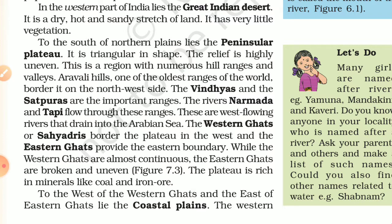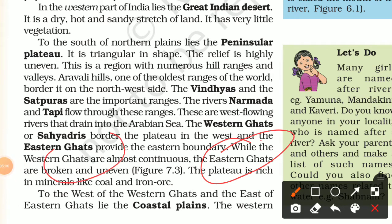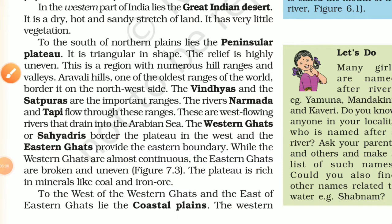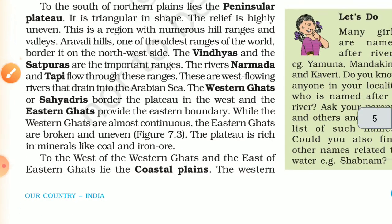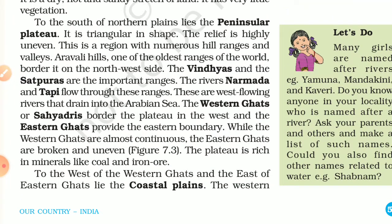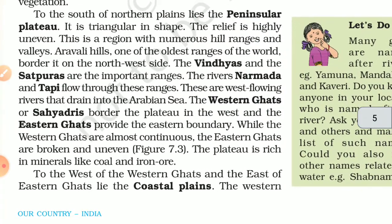The Western Ghats border the plateau in the west and the Eastern Ghats provide the eastern boundary. The Western Ghats are almost continuous while the Eastern Ghats are broken and uneven. The plateau is rich in minerals like coal, iron, and oil.